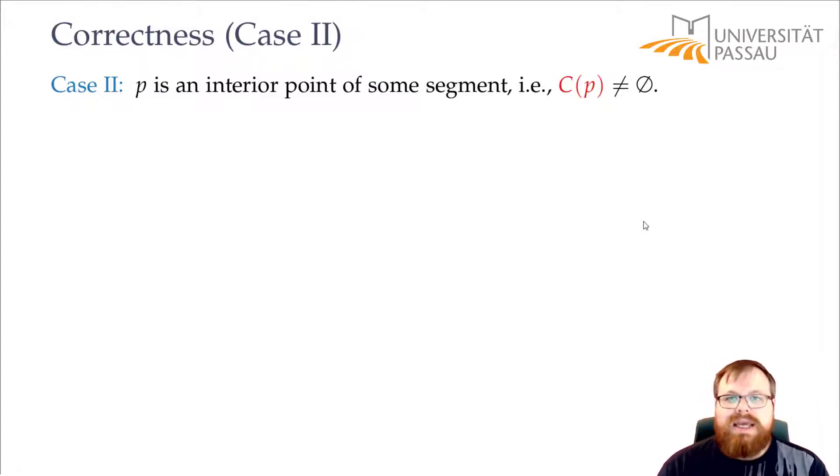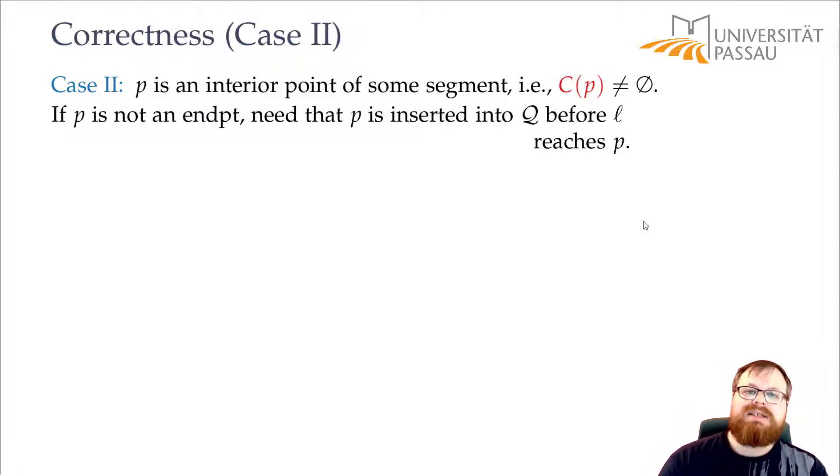But if it's not the endpoint of some segment, then it's not clear yet that it is actually in the queue. So we have to show that at some point P entered the queue, that our algorithm finds it. So we have to show that at some point P is inserted into the queue before L reaches it.